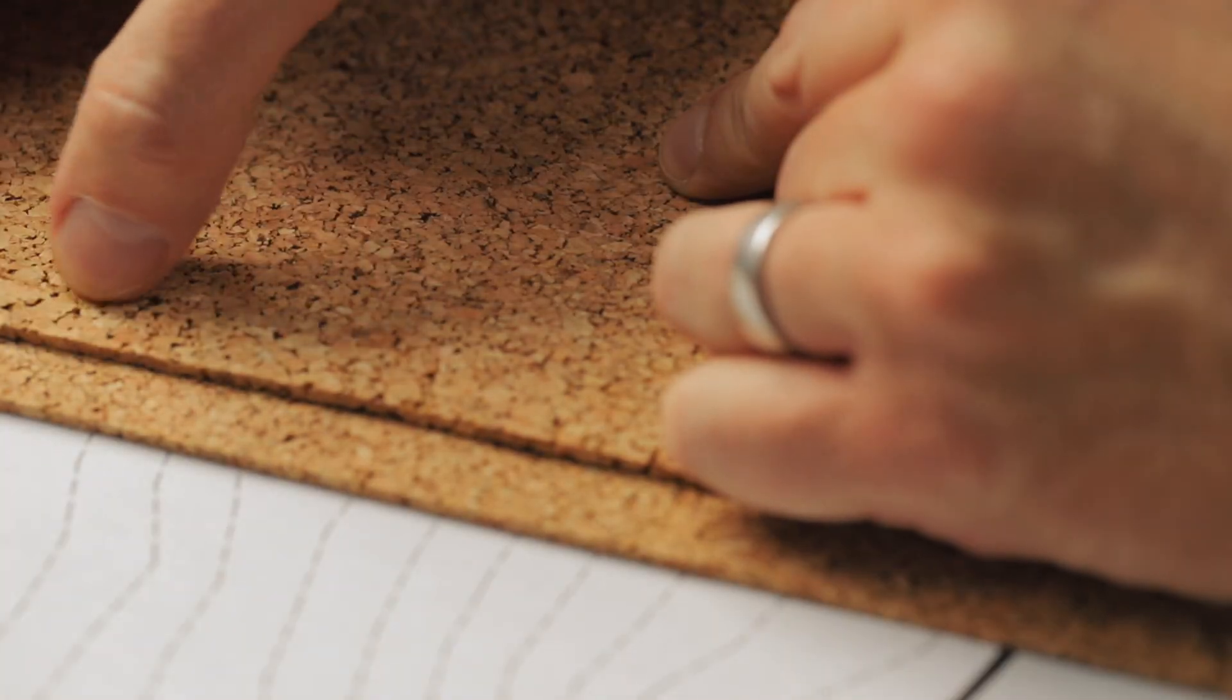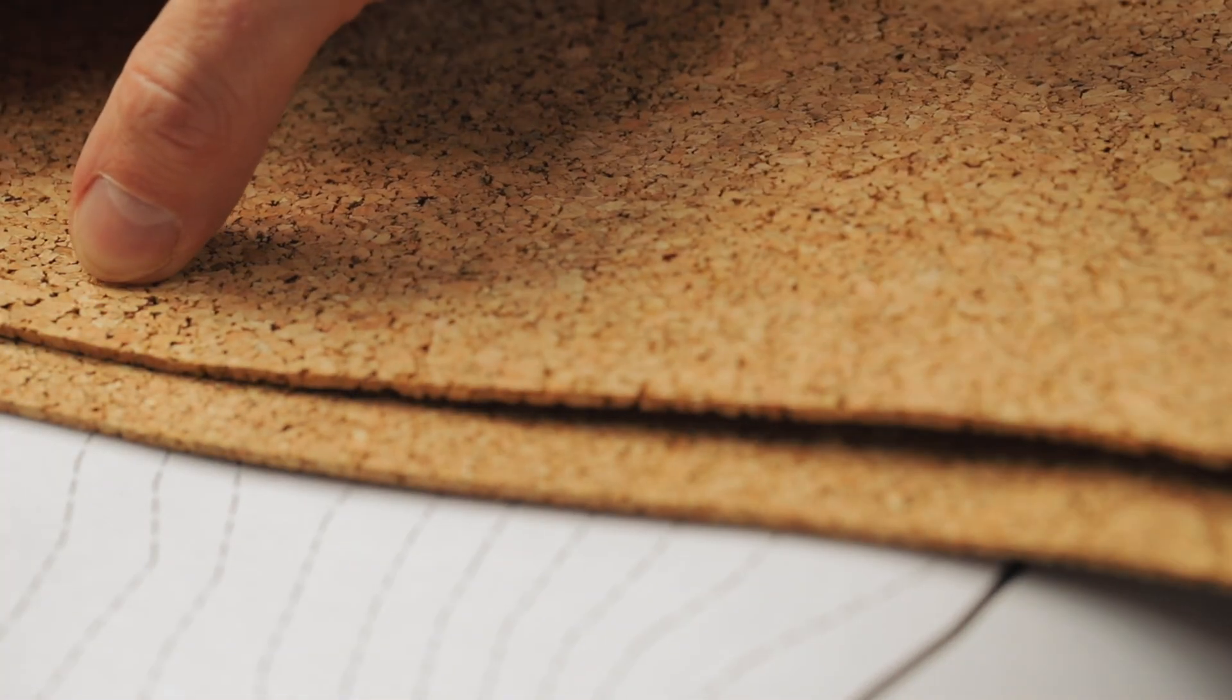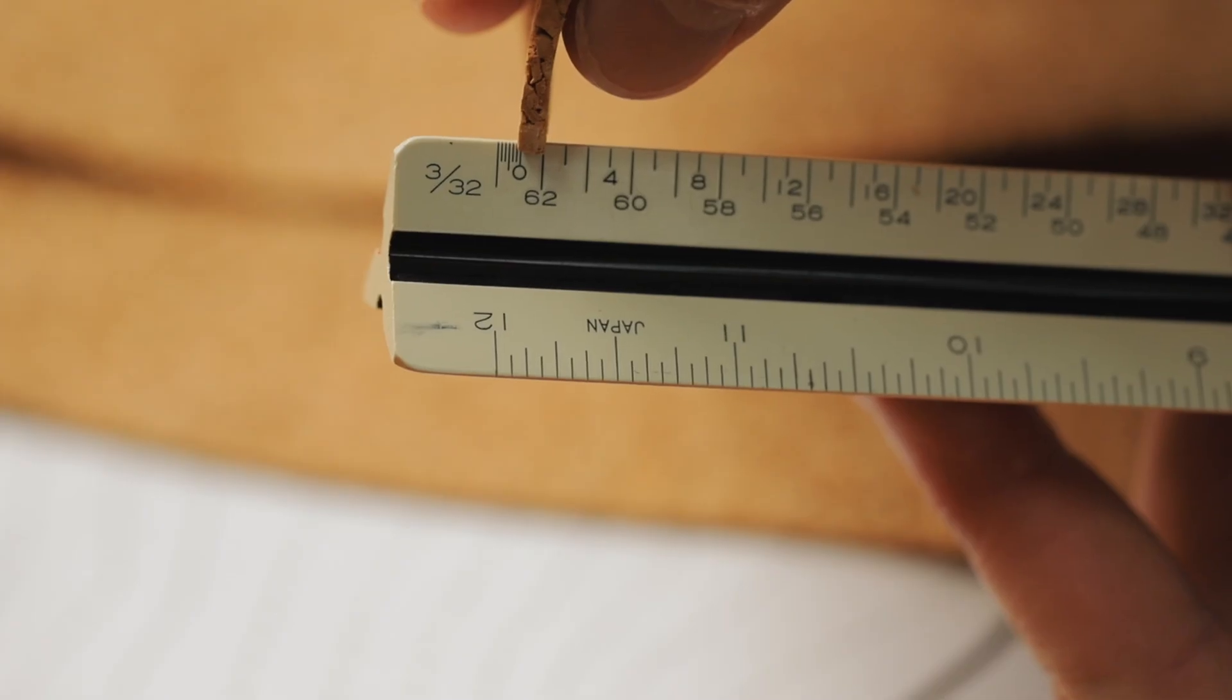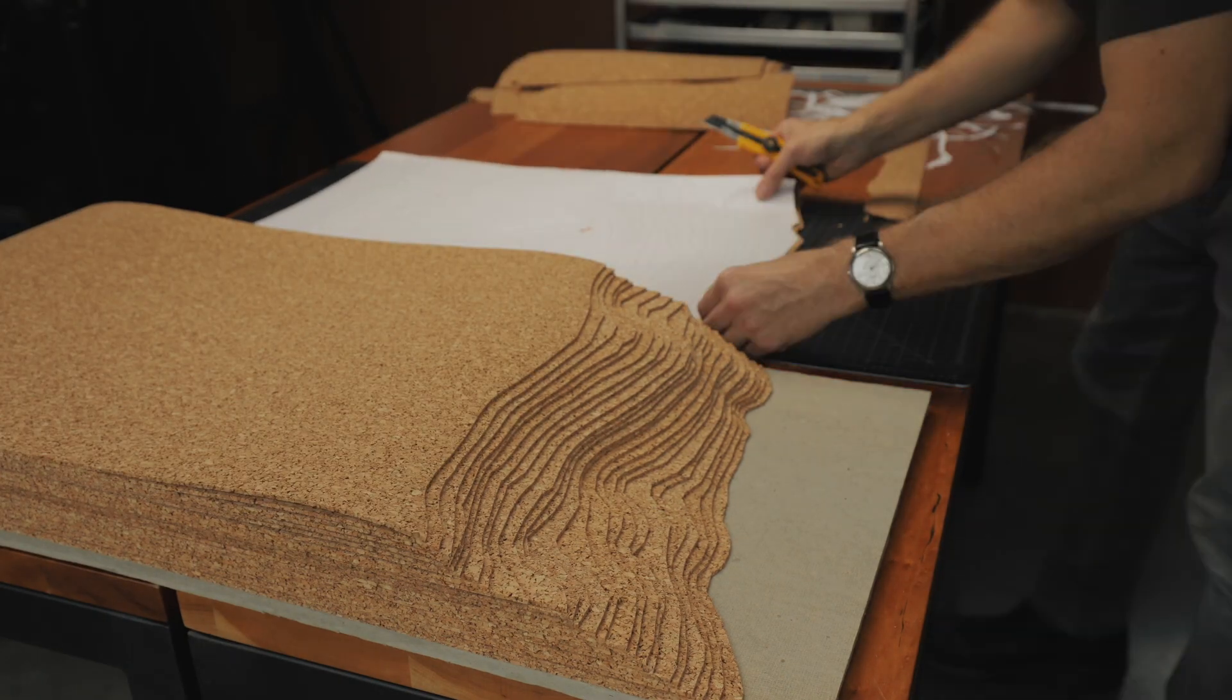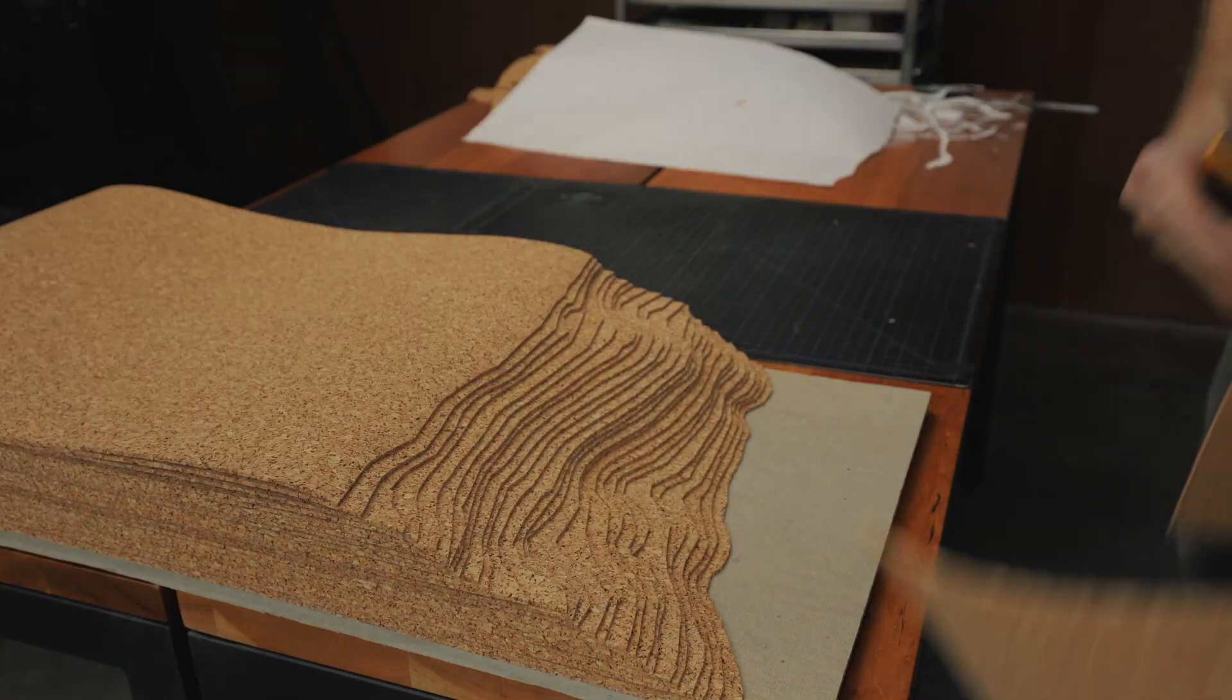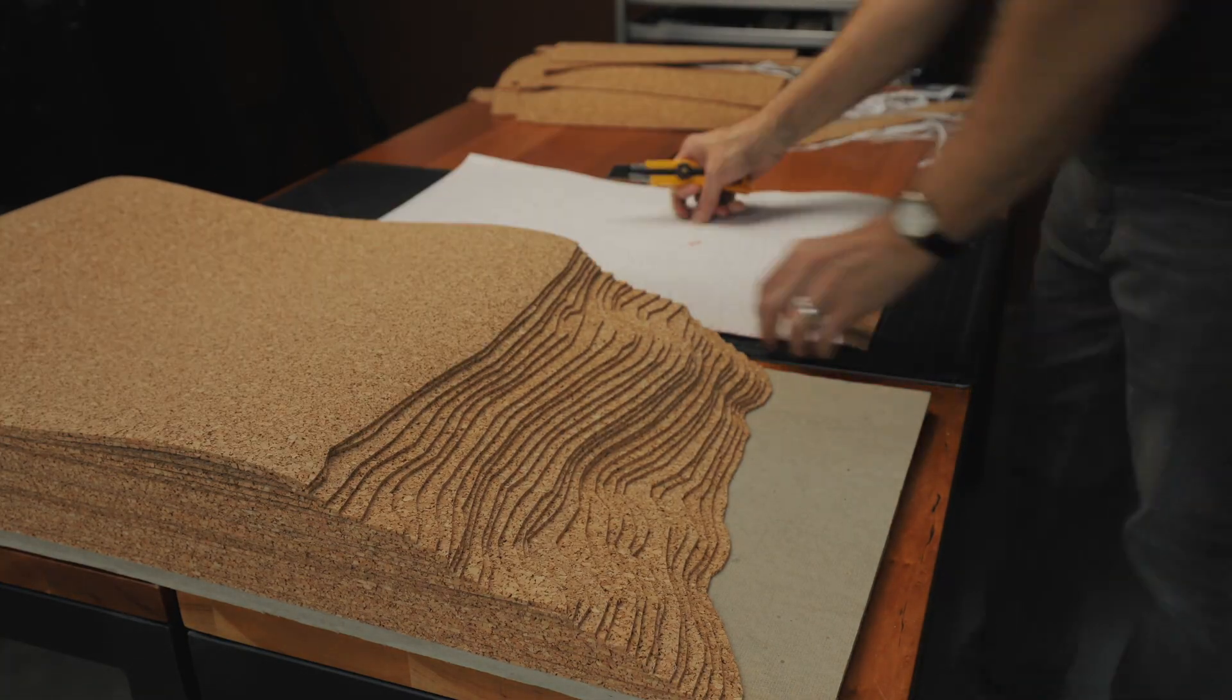The other advantage to this is that the cork layers that I'm going to use for the model base are also 3/32nds of an inch thick. So as I'm building up the contours of the topography, I know for every layer I'm going to be looking at a one vertical foot increment.